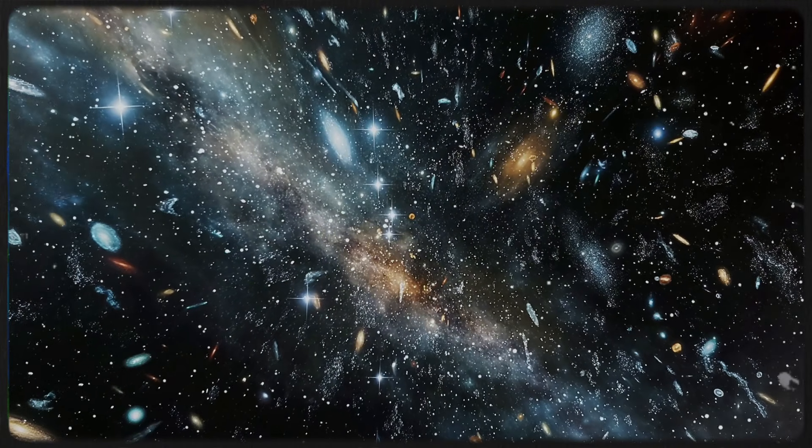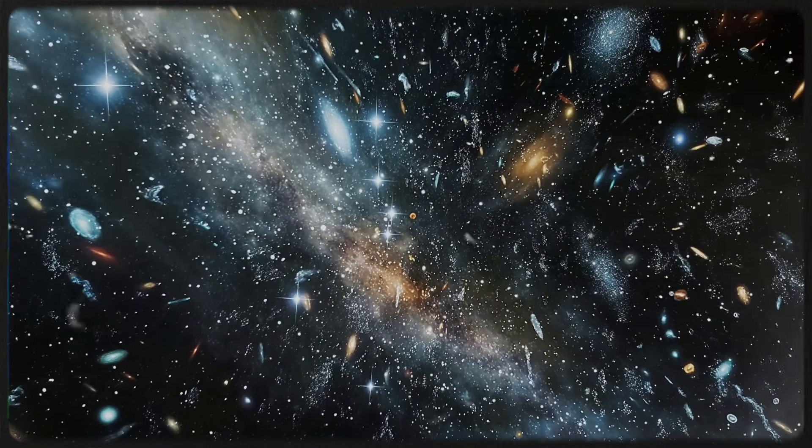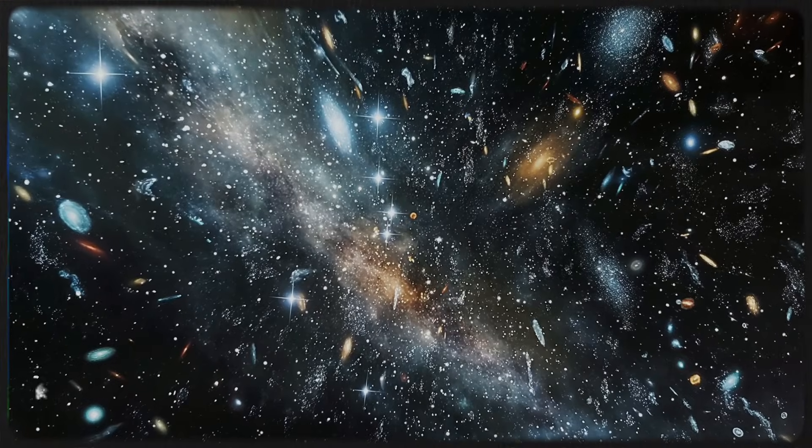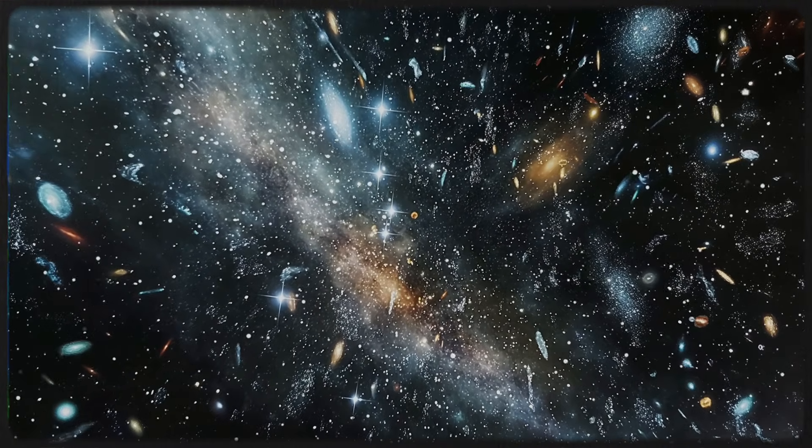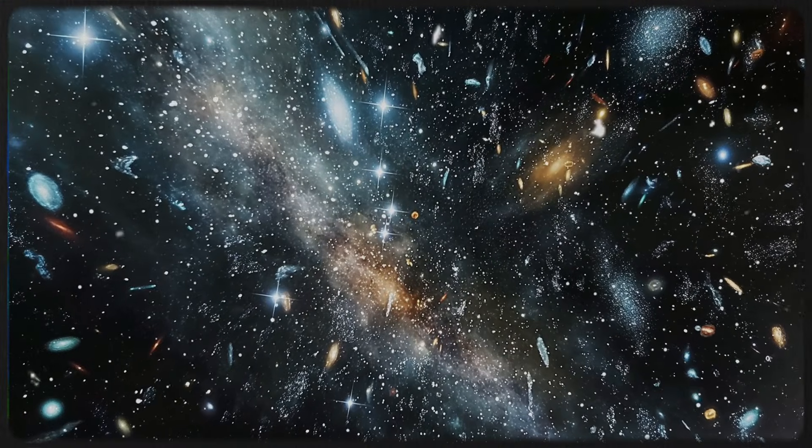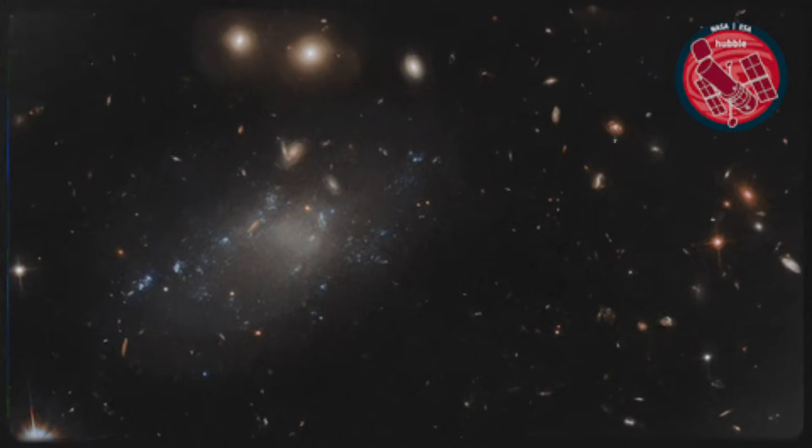But when we look at galaxies and galaxy clusters, we see some curious behavior that can't be explained by visible mass alone. Stars at the outer edges of galaxies are spinning faster than Newton's laws suggest they should, and without something extra to hold them in place, they should fly apart. To solve this puzzle, scientists proposed dark matter, a mysterious substance that can exert gravitational force and keep galaxies intact.